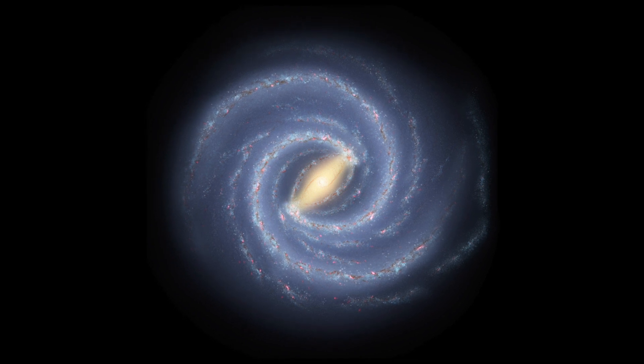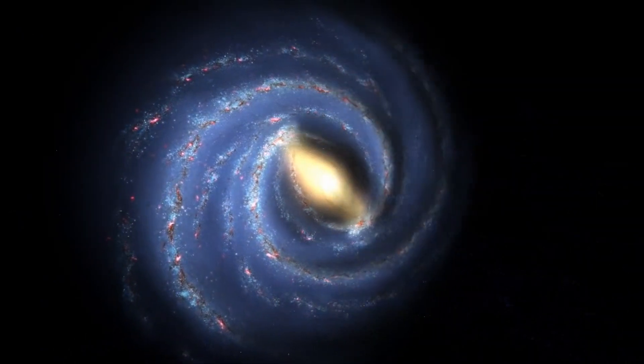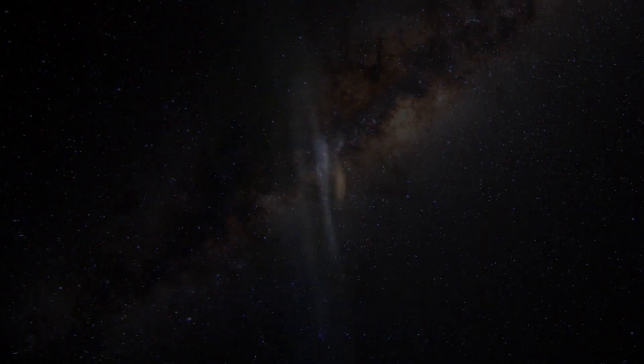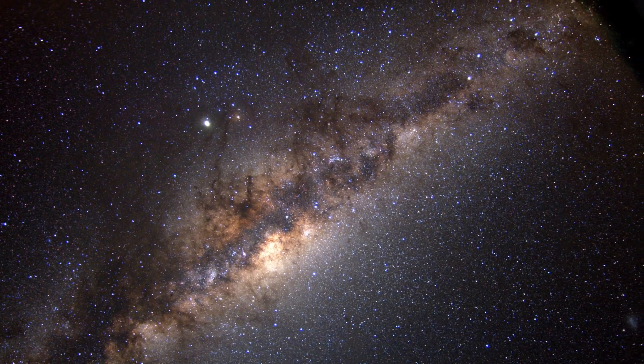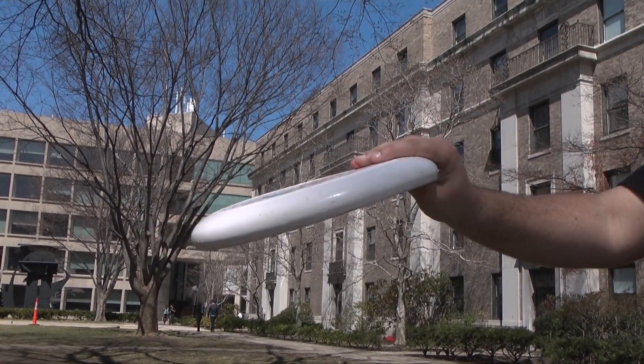But how was this photo taken? Down here on Earth, we're stuck within the plane of our galaxy's disk. This is why the Milky Way appears as a band in the night sky. We're seeing our galaxy edge on, like viewing a frisbee from the side.